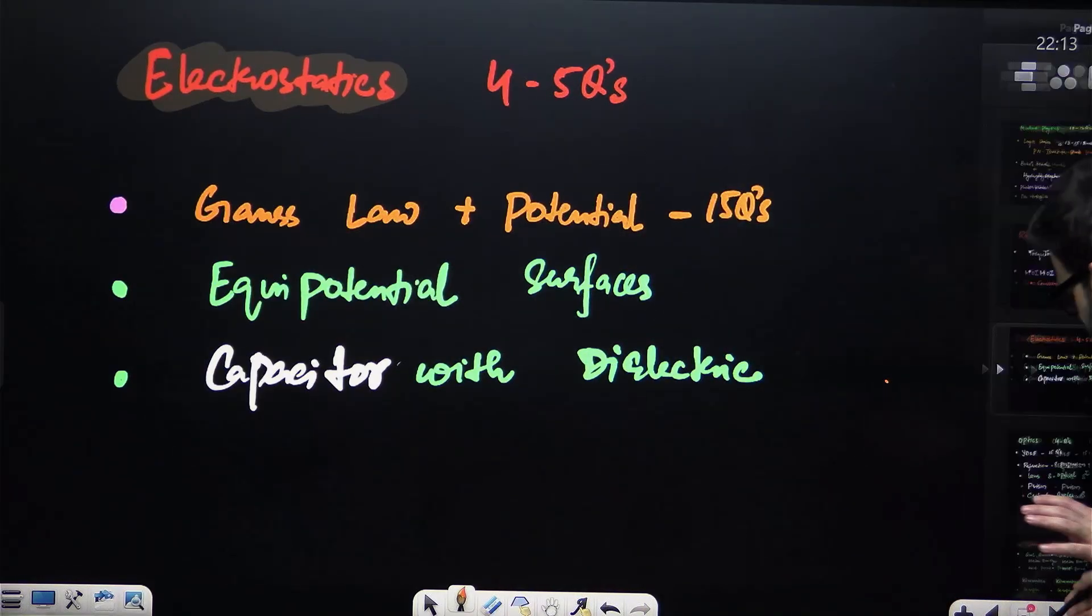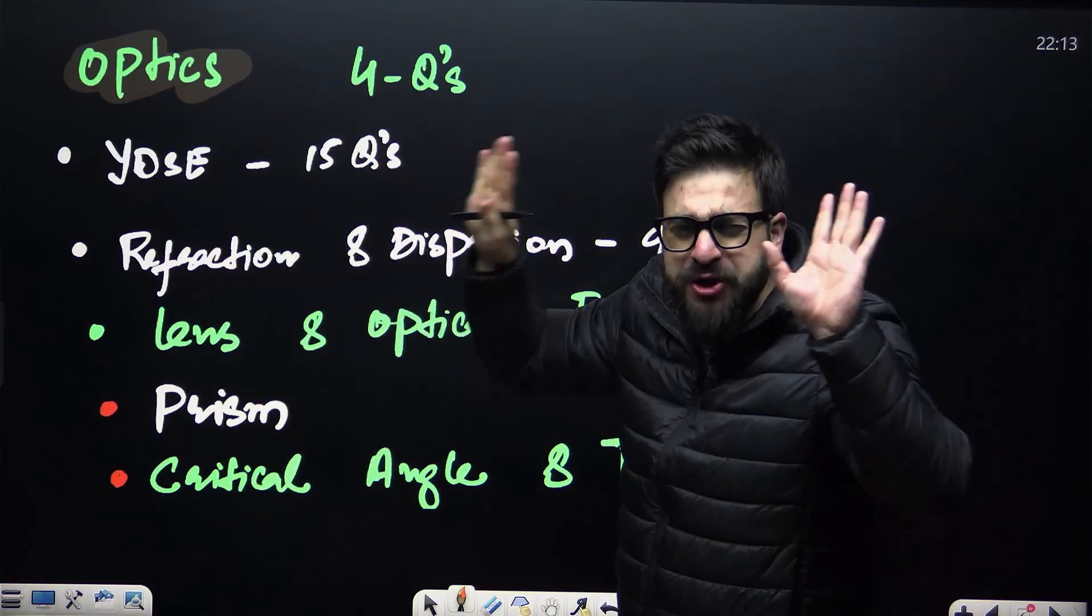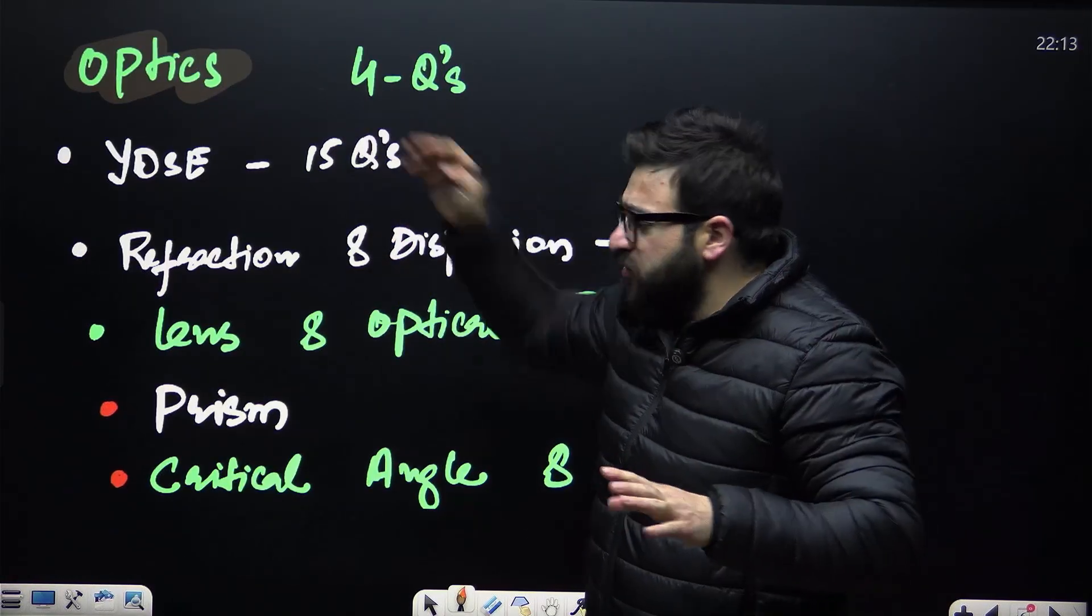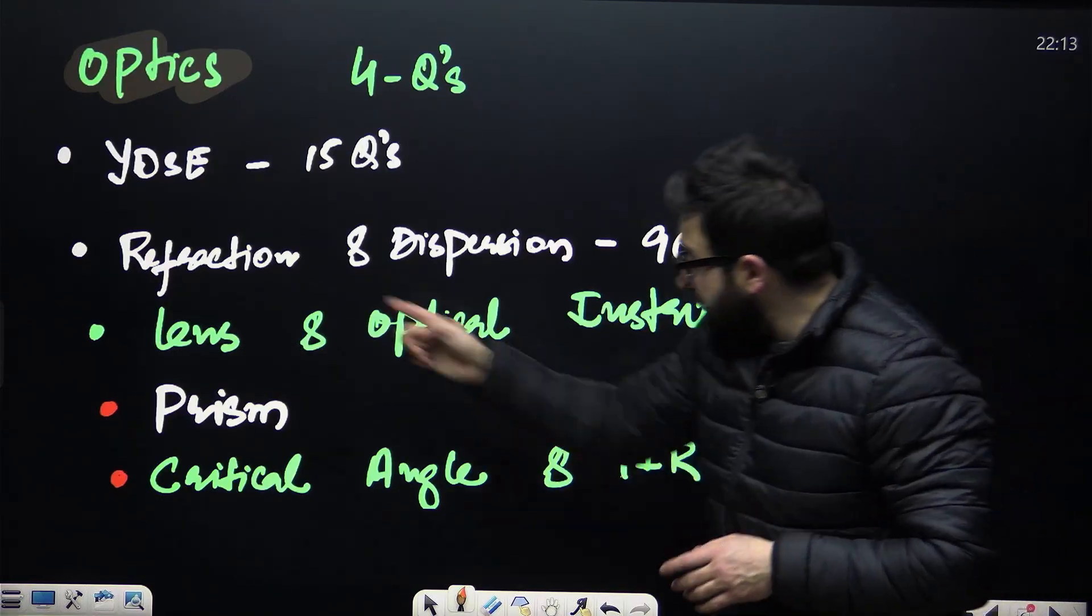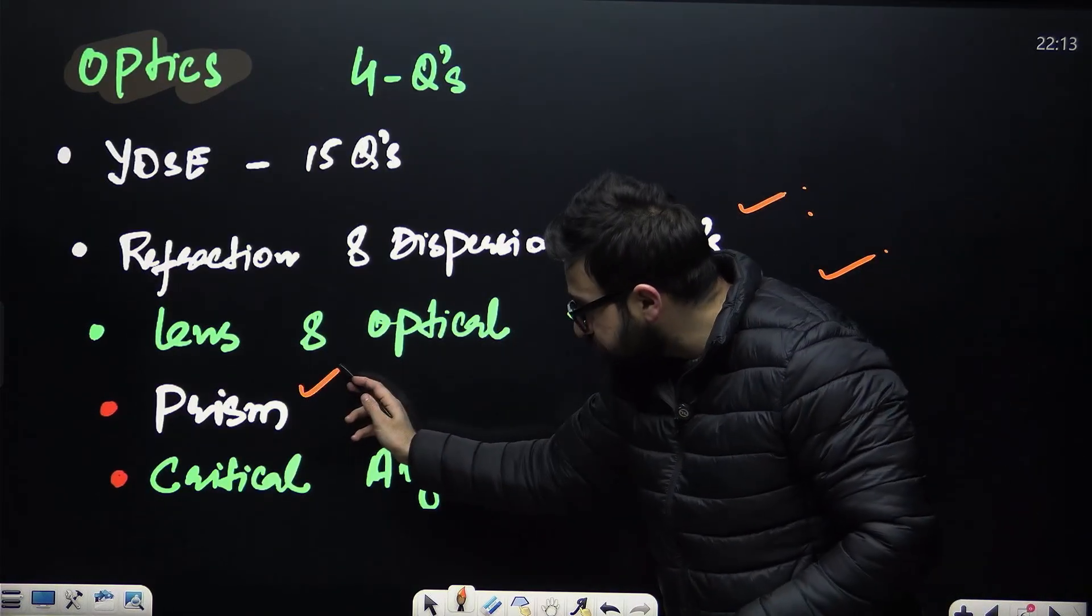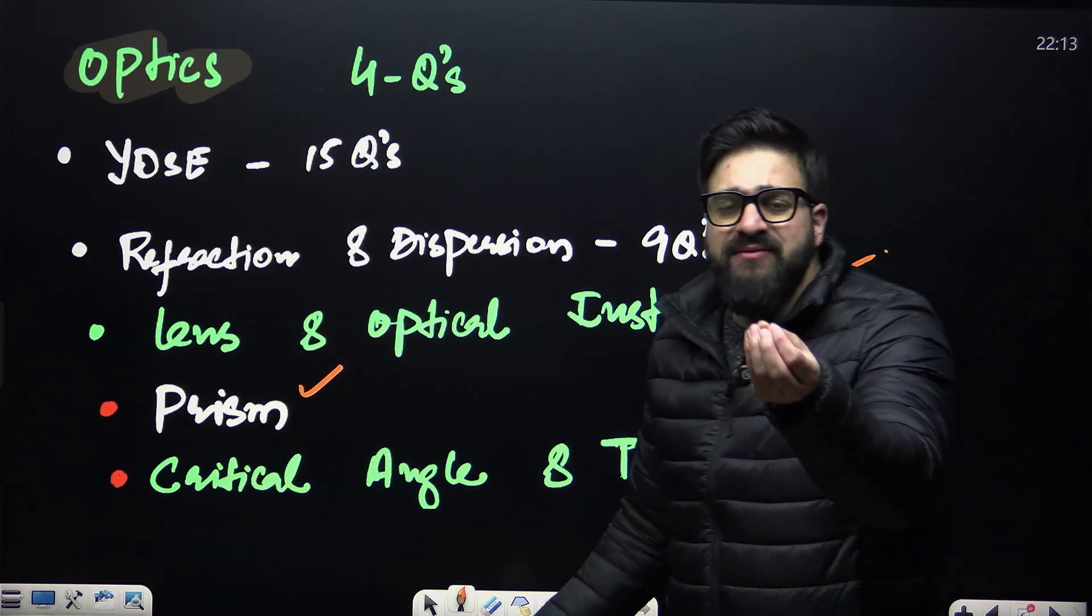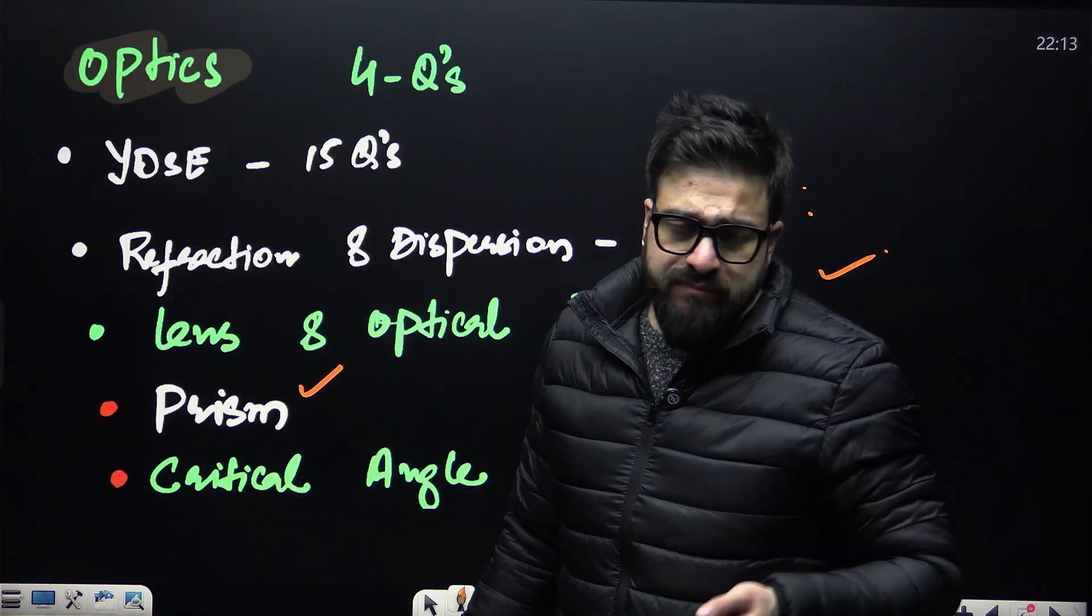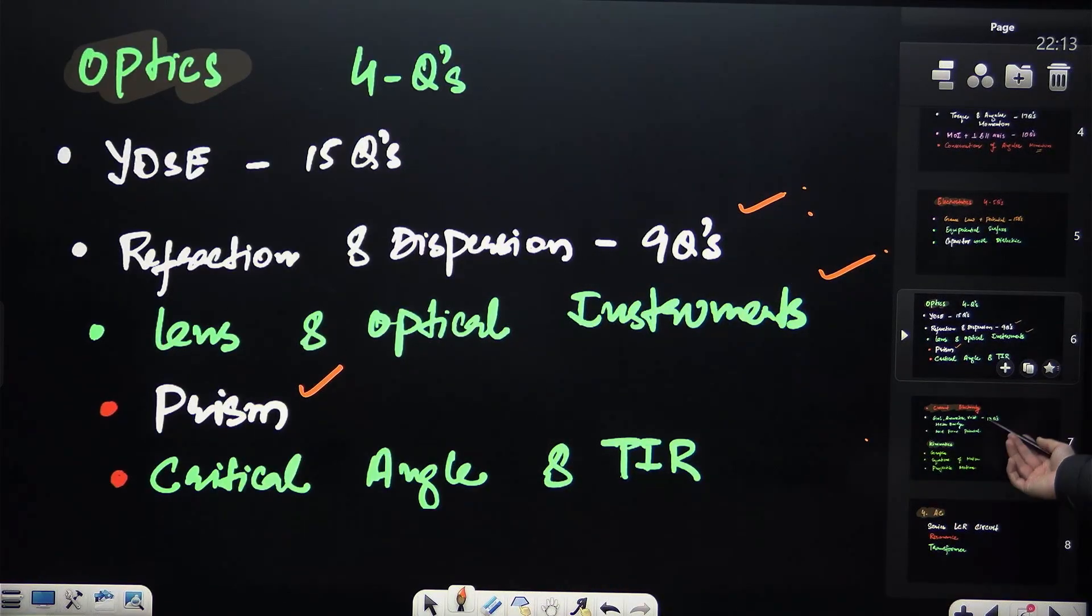Then we say optics. YDSE, extremely important from the wave optics portion. Refraction and dispersion, extremely important. Lens and optical instruments, extremely important. We say prism and critical angle, we say TIR. Optical instruments - we have microscope, simple microscope, and we say telescope.